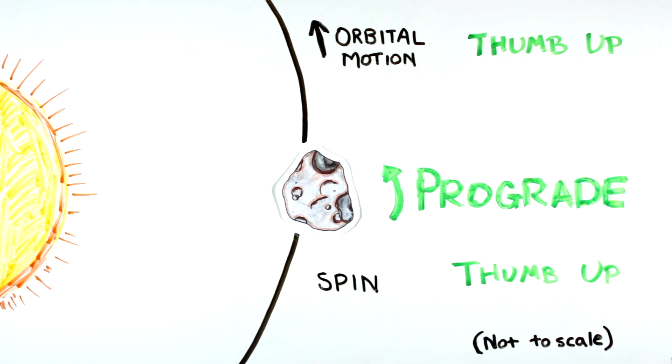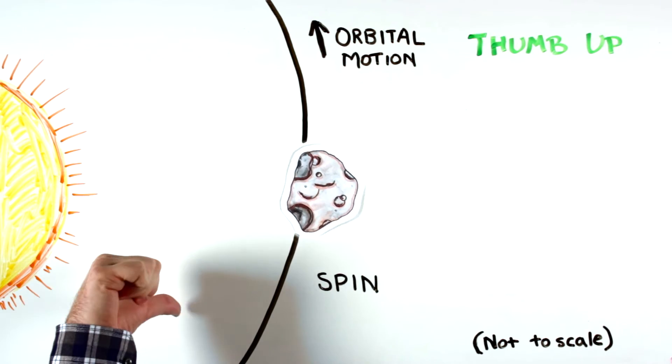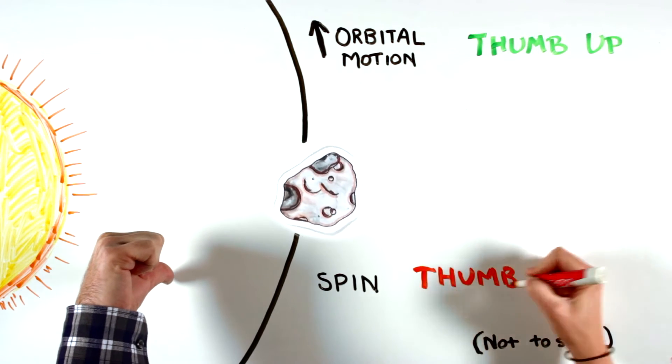An asteroid has a retrograde spin if the direction of its spin is opposite that of its orbit, and your thumb points in the opposite direction.